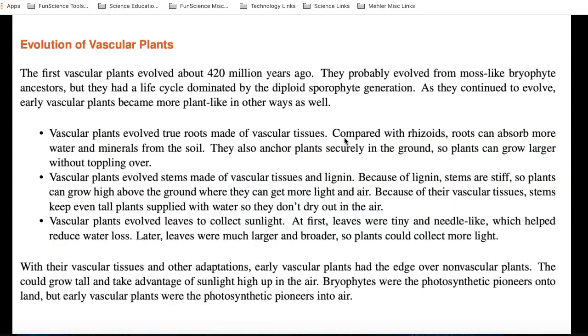When did vascular plants evolve? Vascular plants evolved about 420 years ago, just after the Cambrian explosion. And they have probably evolved from moss-like bryophyte ancestors. The vascular plants had true roots. They also evolved stems of vascular tissue and lignin. Make sure you know what lignin is. And vascular plants evolved leaves to collect sunlight and make photosynthesis more efficient.